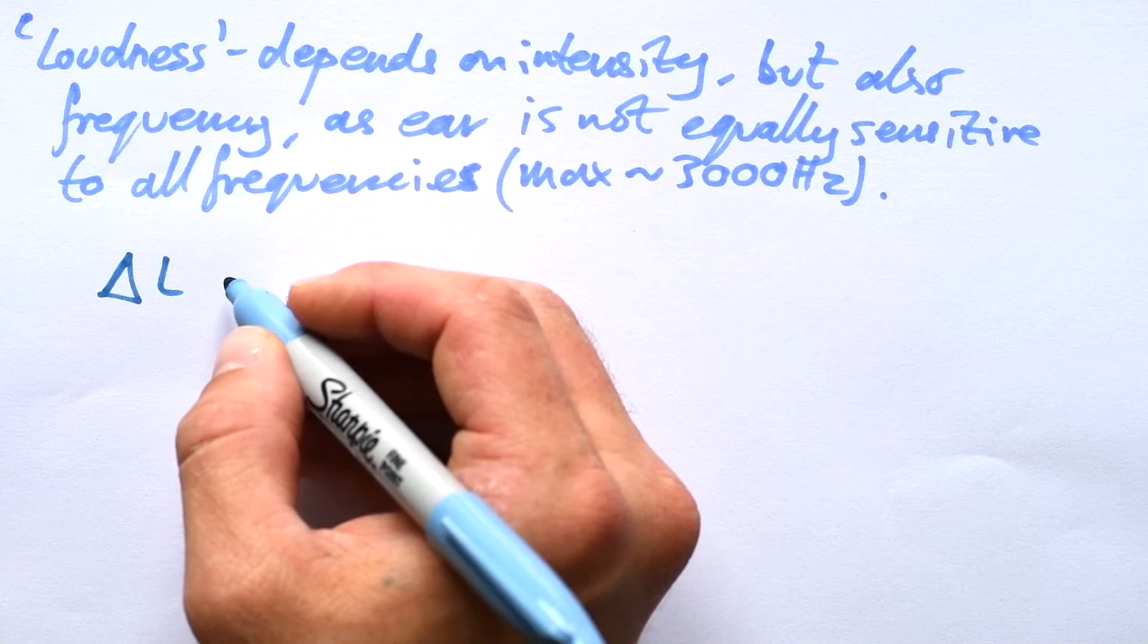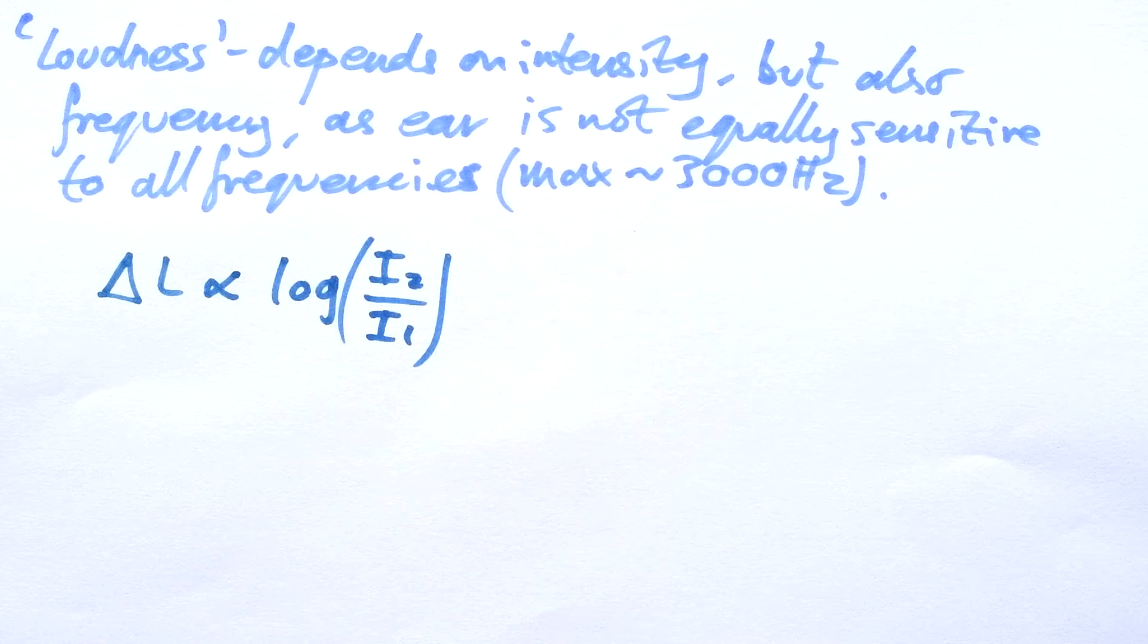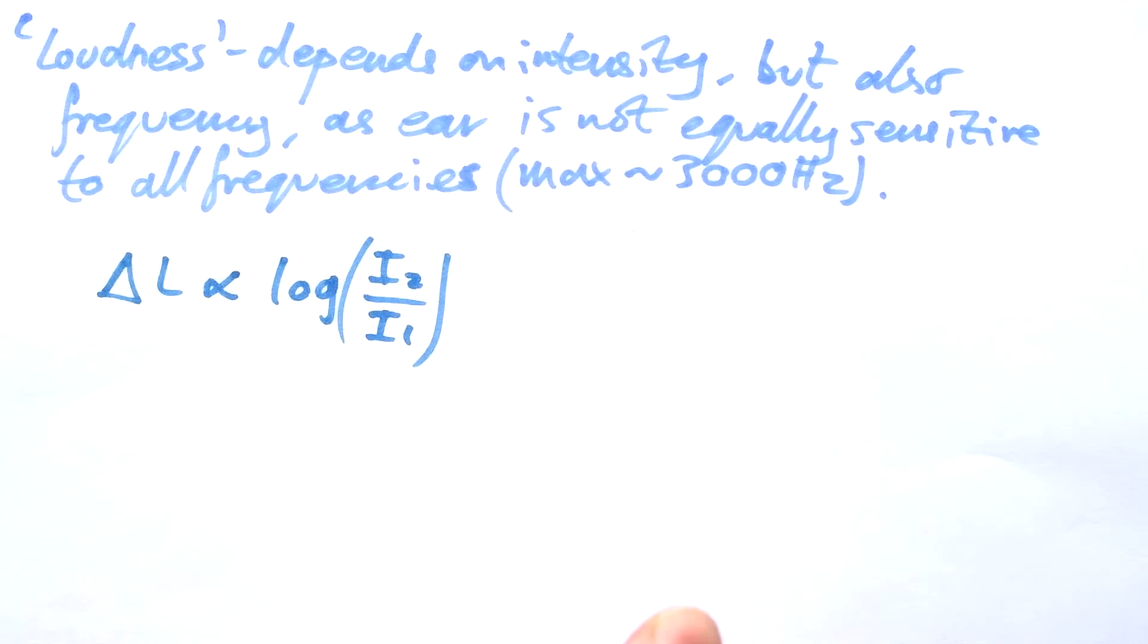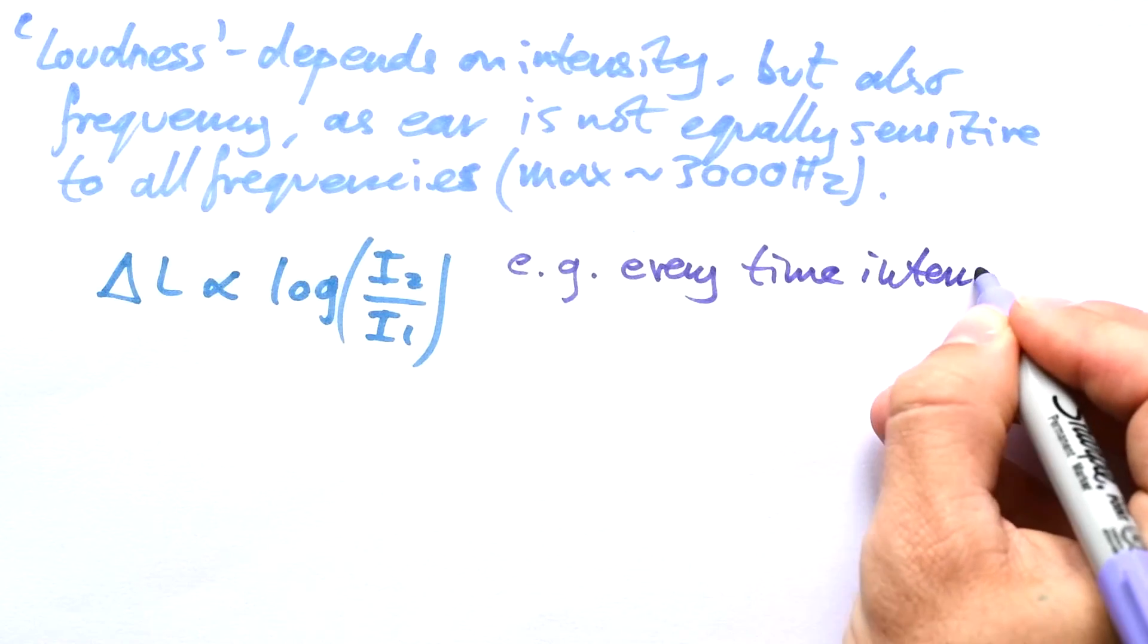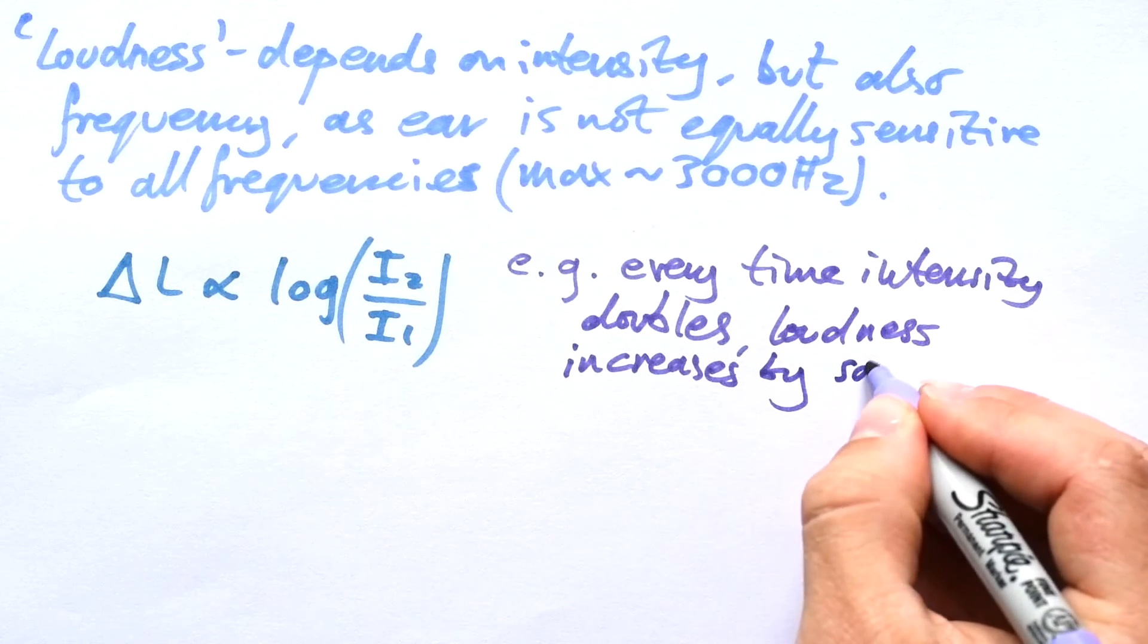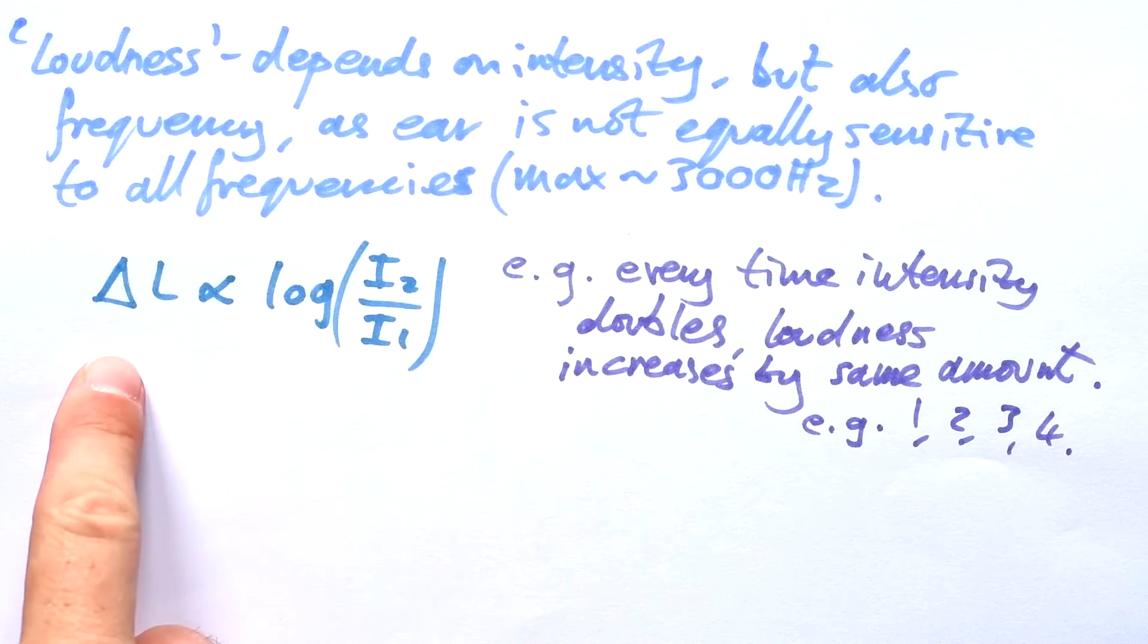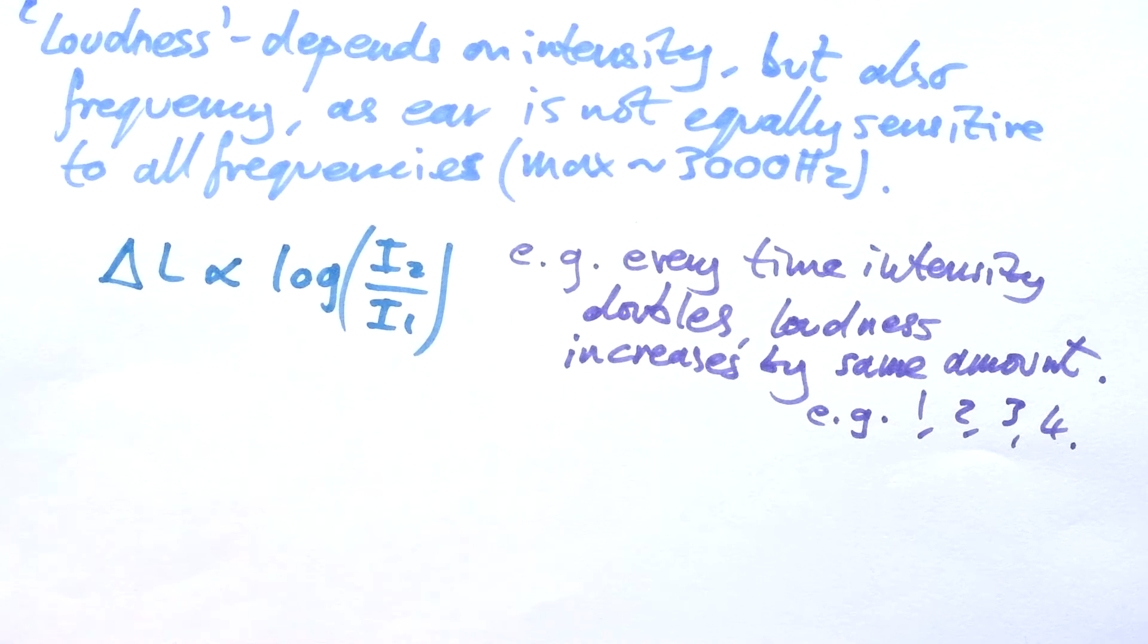So we can say the change in loudness between two sounds, how we interpret it, that's going to be proportional to log of the ratio of those intensities of those sounds. So what does that mean? Well what it doesn't mean is if you double the intensity of a sound it will sound twice as loud to you. But what it does mean, much like our octaves, is that every time intensity doubles, or goes up by some factor, loudness increases by same amount. For example, 1, 2, 3, 4. So if I start off with a loudness of 1 and if I double the intensity I end up with a loudness of 2. If I double it again to four times, I end up with a loudness of 3. That's how logs work.